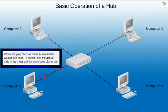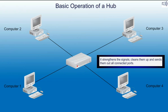When the ping reaches the hub, remember what a hub does. It doesn't see the actual data in the message — it simply sees bit signals. It strengthens the signals, cleans them up, and sends them out all connected ports.